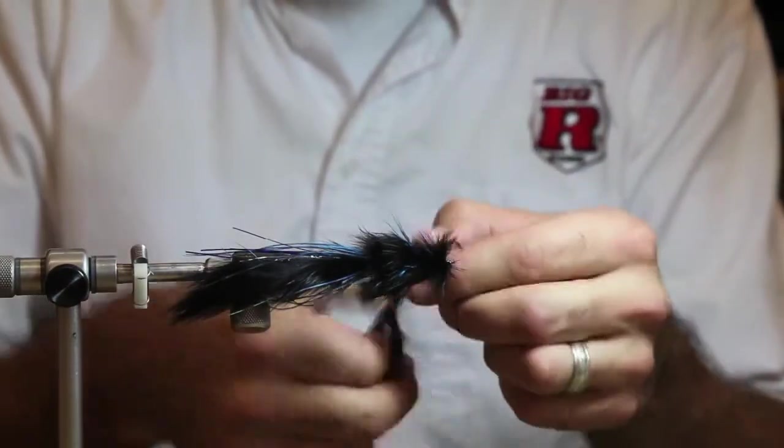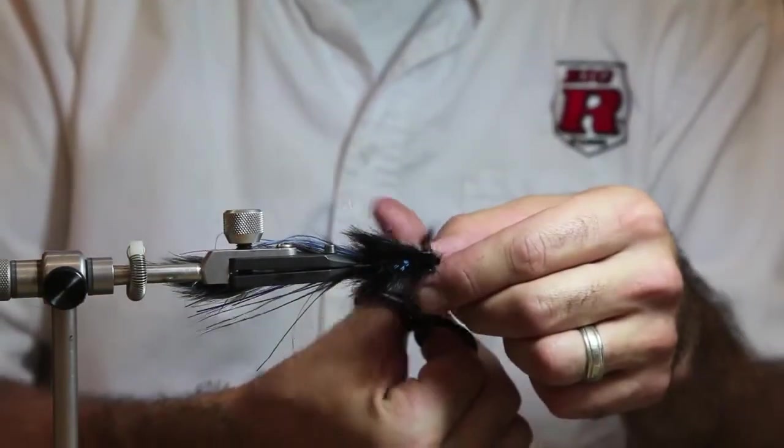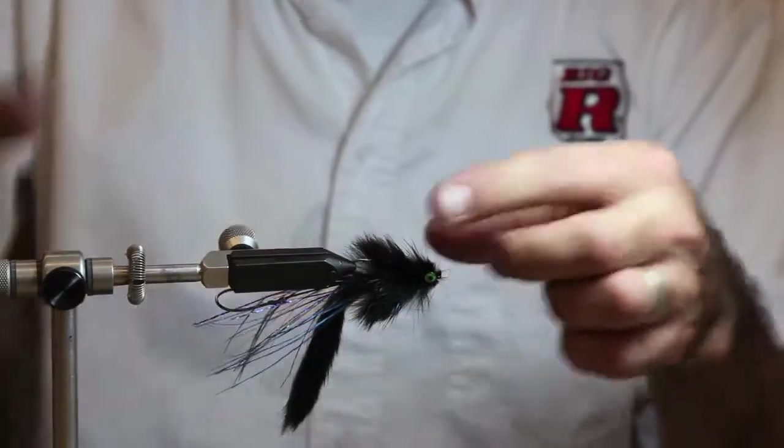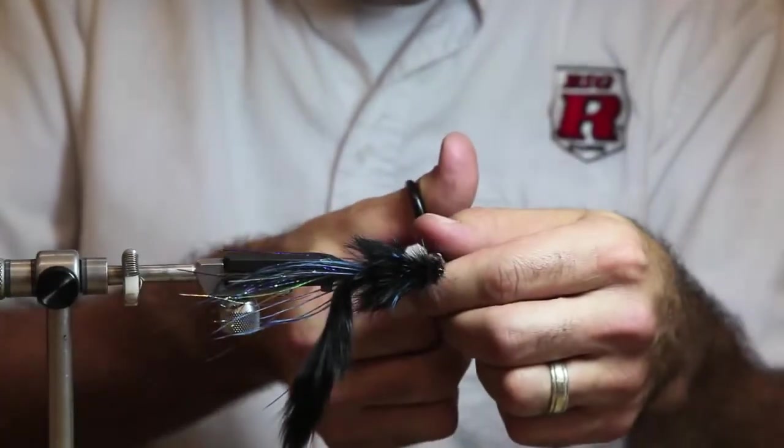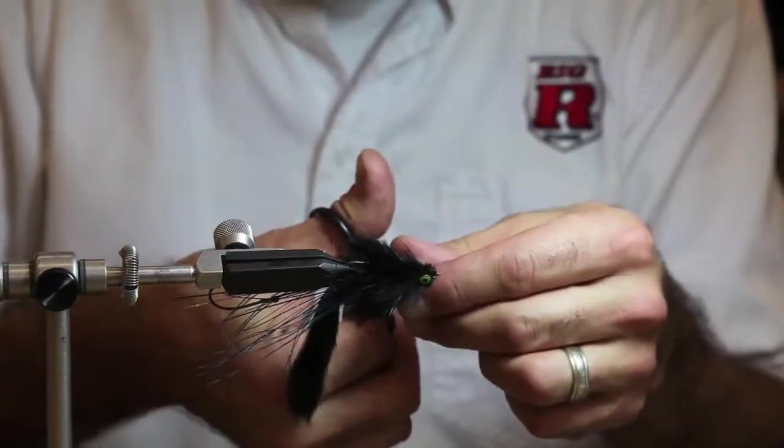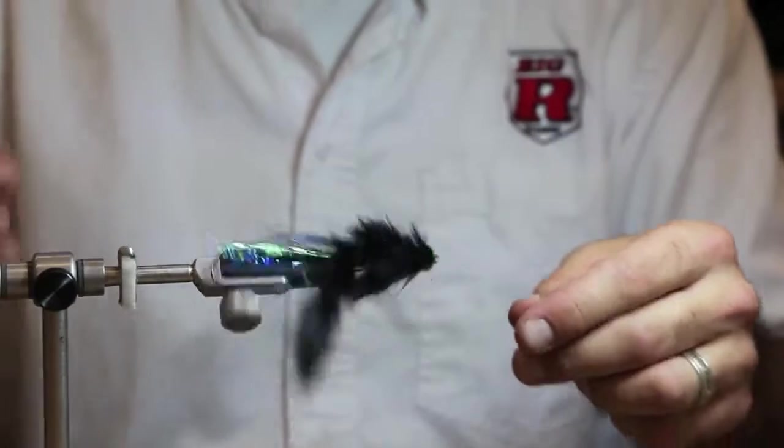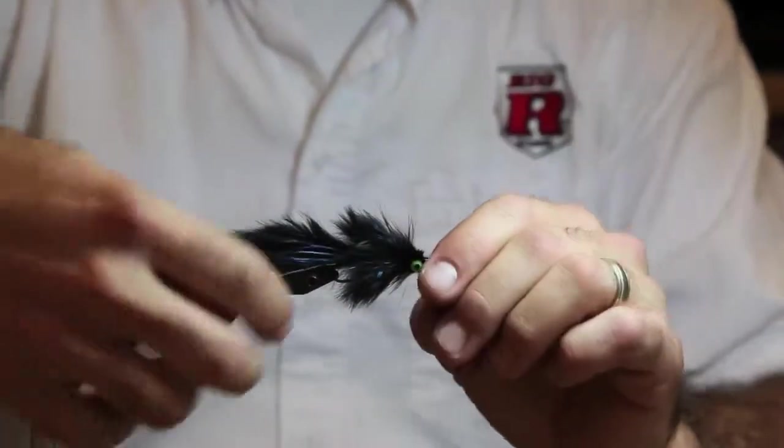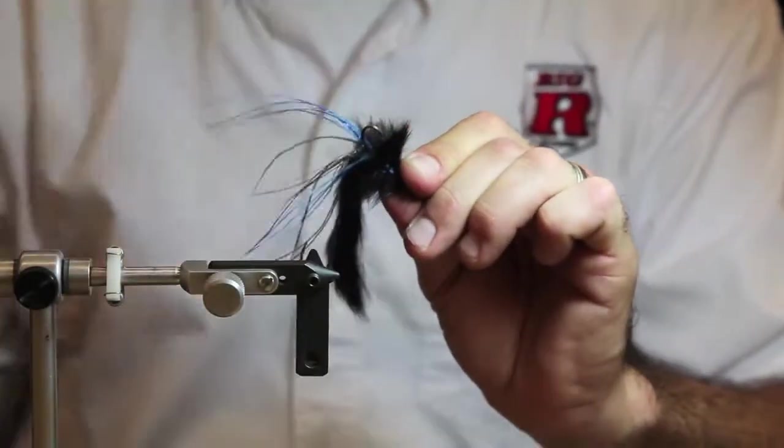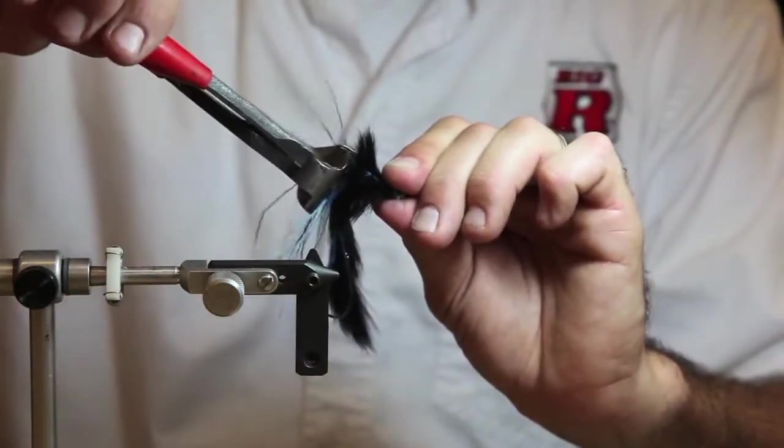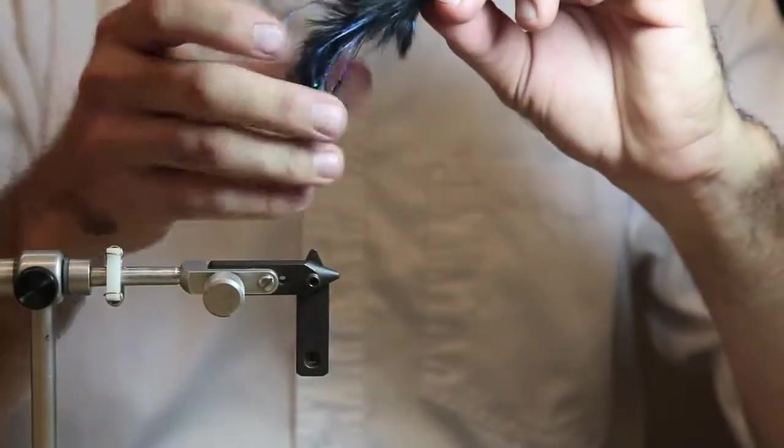Then I like to trim up this head a little bit, just so it's not so crazy and wild. That's it. So, then to finish this fly off, I always cut this hook off right here. You really don't need two hooks, you just need the one stinger hook. Then I cut that off, and there you go. That's your fly right there.